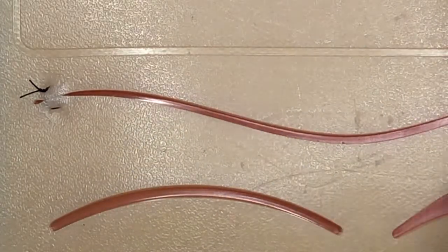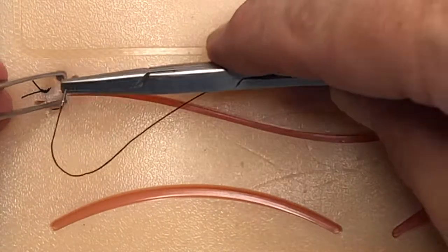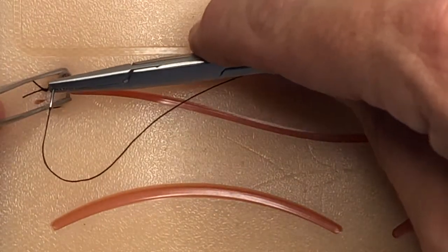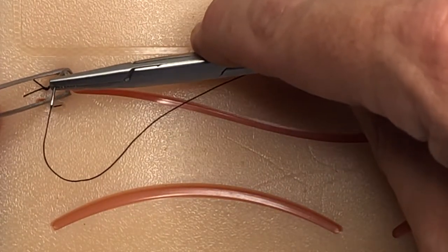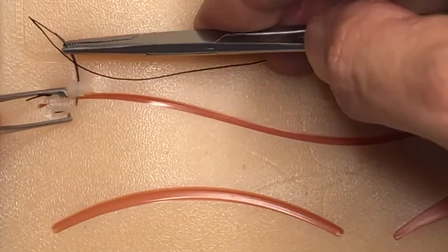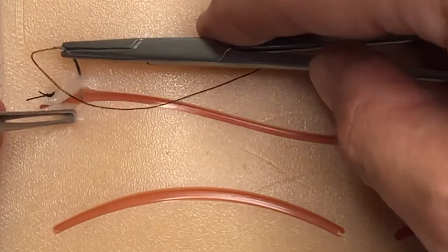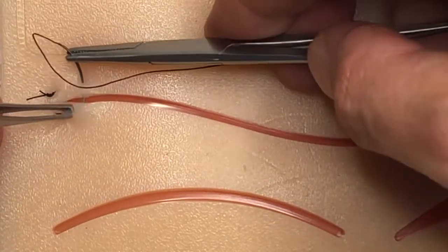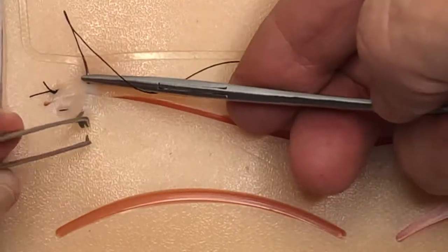We're grasping our needle. We can use our tissue forceps to help stabilize the tissue. So we're going to go in right here, turn the wrist, bring it through. I'm going to grab the needle, pull through.